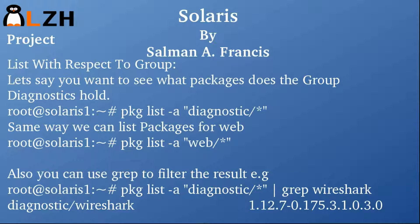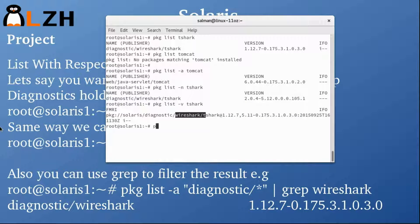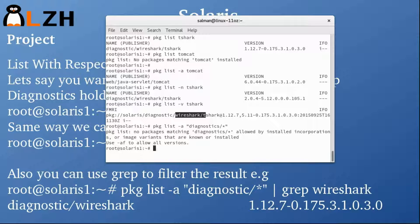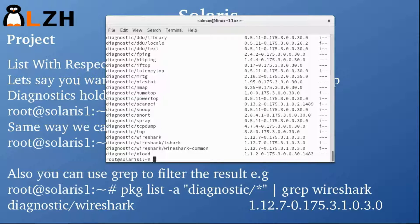If you want to list packages with respect to a group — for example, to see what packages the diagnostics group holds — you run 'pkg list -a diagnostics/*'. This lists all the packages and software available in the diagnostics group. You can always grep for a specific package; for example, grepping for tshark finds it right there.